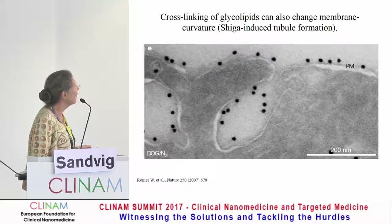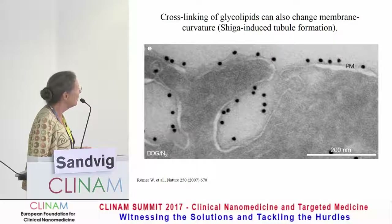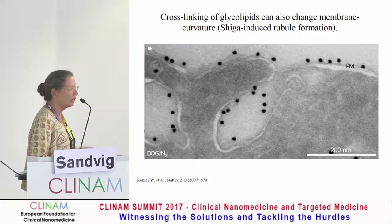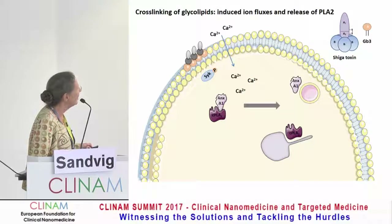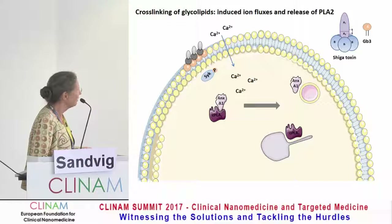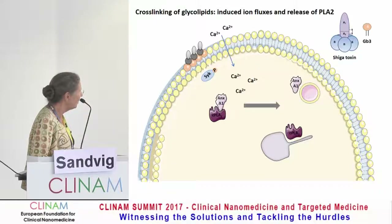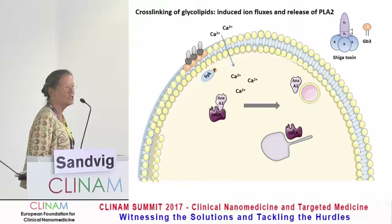As illustrated here, cross-linking of glycolipids can also change membrane curvature. This is Shiga-induced tubular formation, published by Römer and co-workers in Nature. You really affect what's going on at the cell surface. Not only membrane invagination can be changed — you can even induce calcium fluxes across the membrane when you cross-link a lipid like GB3, either by adding Shiga toxin or antibodies to GB3. You will get Src phosphorylation, and you can get dissociation of a complex containing annexin A1 and phospholipase A2, which then becomes free and can induce tubulation and membrane changes inside the cell.